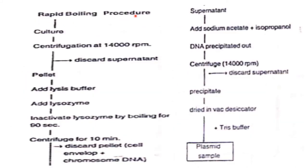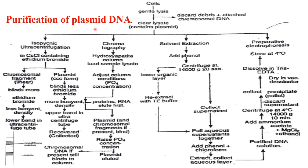In the case of the rapid boiling procedure: take the culture and centrifuge at 4,000 rpm, discard the supernatant. Take the pellet, add lysis buffer, add lysozyme, then inactivate lysozyme by boiling for 90 seconds. Centrifuge for 10 minutes, discard the pellet which contains cell envelope and chromosomal DNA. Take the supernatant, add sodium acetate plus isopropanol — the DNA will precipitate out. Centrifuge at 14,000 rpm, discard the supernatant, dry the precipitate in a vacuum desiccator, then add Tris buffer to preserve the plasmid.